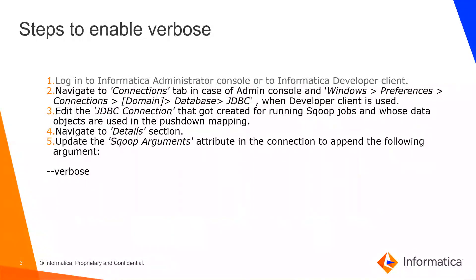When doing this from the developer client, we can go to Window Preferences, under Connections, and search for the JDBC connection being used for Sqoop. We can then edit that JDBC connection and under the Sqoop arguments, put the --verbose flag.